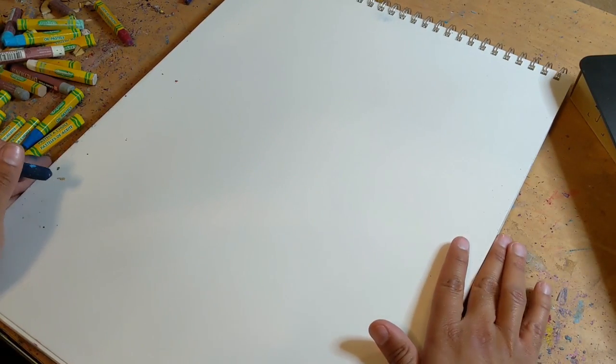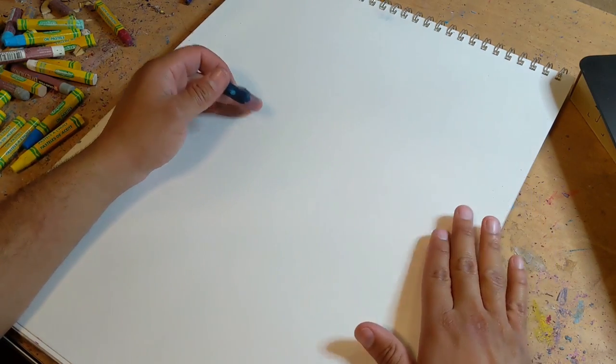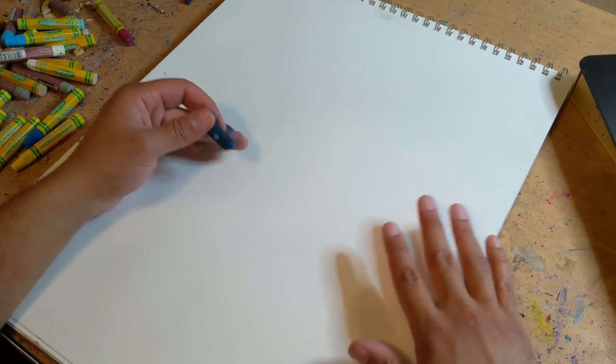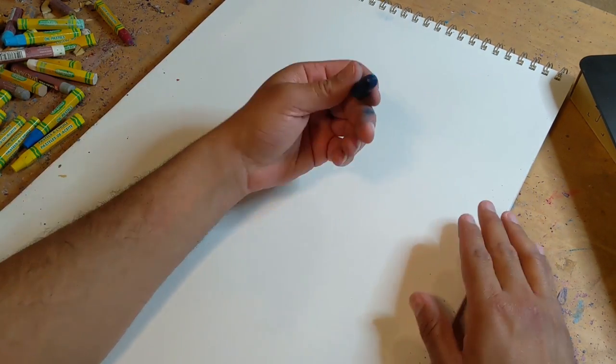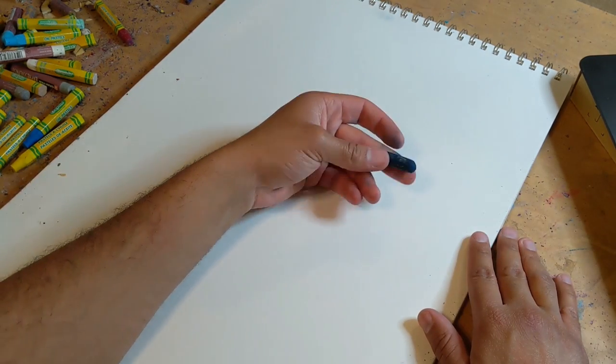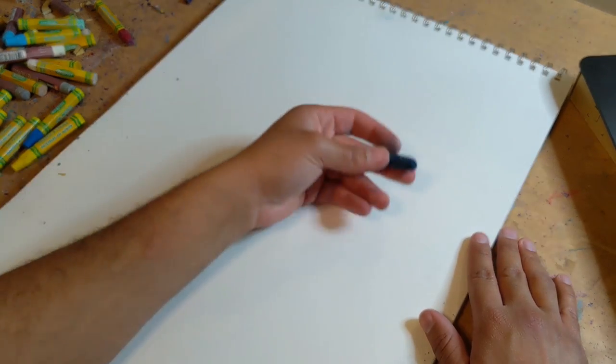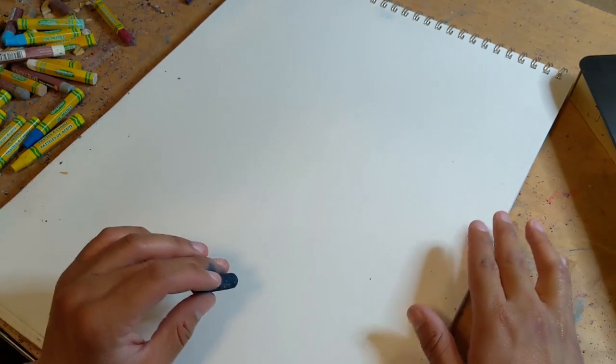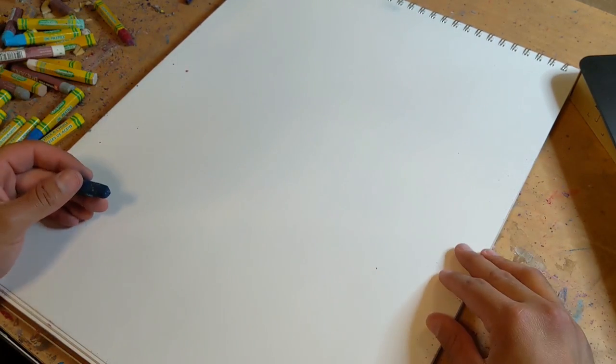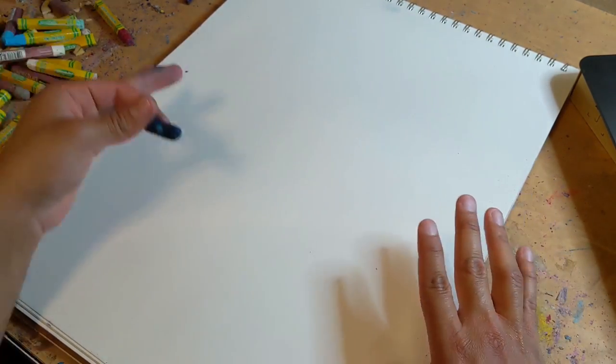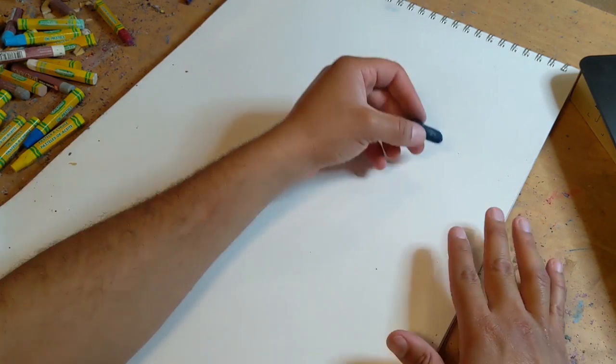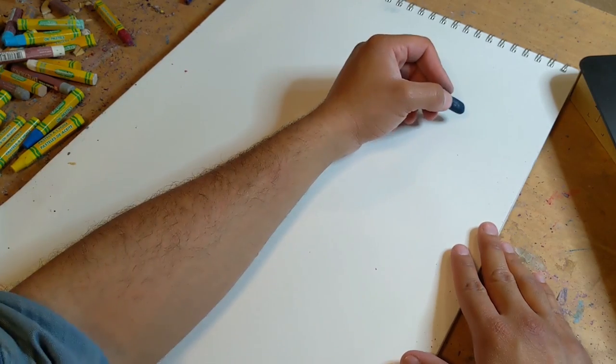Now that we have our sheet of paper ready to go, I know this white sheet of paper in front of any artist can be very intimidating. One thing I like to do just to kind of get over the nerves is go straight into oil pastel or paint or whatever you're using. Sometimes when I overthink it, that's when I want to go into too much detail.